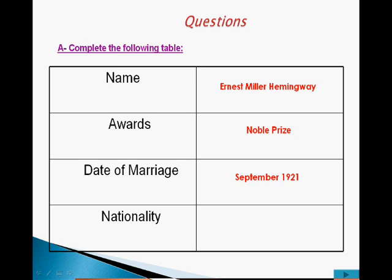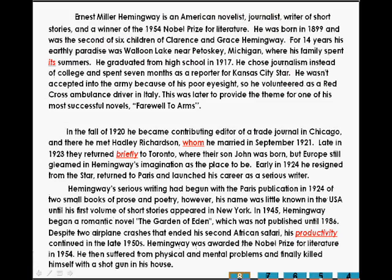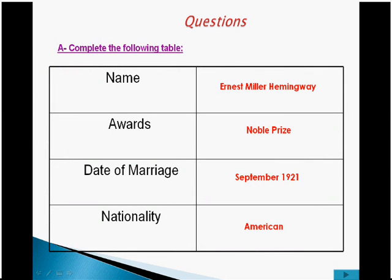The last piece of information needed is nationality — you find it at the very top of the passage: he is American. If you just read the pieces of information in the table, you will know most of what was in the passage. The passage is about Ernest Miller Hemingway; he won the Nobel Prize; he got married in September 1921; and he comes from America. All of these are facts — no opinion, whenever we find a table, it is always expressing facts.